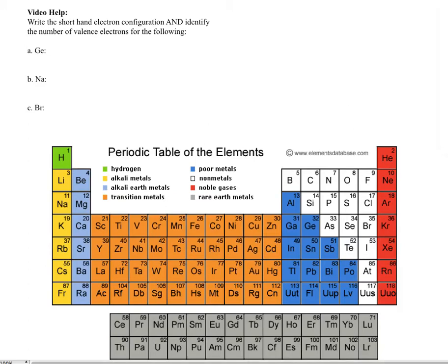Alright, so in this video what I'm going to do is re-explain to you how to write shorthand electron configuration and show you how to determine valence electrons based on the shorthand configuration. And then I'm going to show you the pattern that you can find or use using the periodic table very nicely for determining the number of valence electrons.